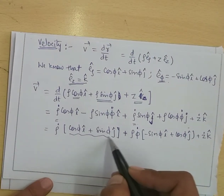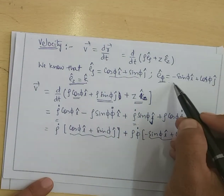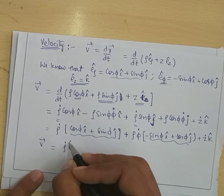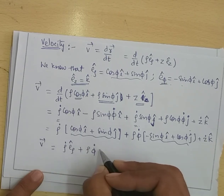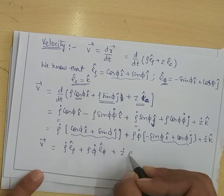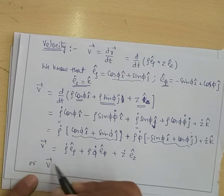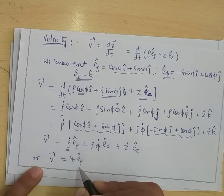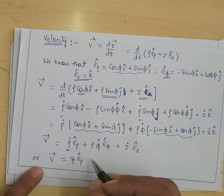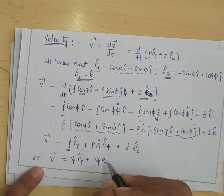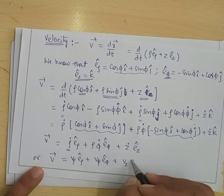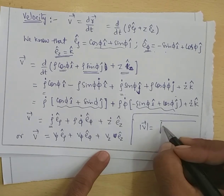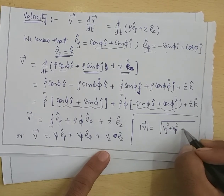Recognizing that cos(Phi)·i-cap plus sin(Phi)·j-cap = E_rho-cap and minus sin(Phi)·i-cap plus cos(Phi)·j-cap = E_phi-cap, the velocity becomes: V = Rho-dot·E_rho-cap plus Rho·Phi-dot·E_phi-cap plus Z-dot·E_z-cap. We can write it as V_rho·E_rho-cap plus V_phi·E_phi-cap plus V_z·E_z-cap, and the magnitude is root of (V_rho² + V_phi² + V_z²).